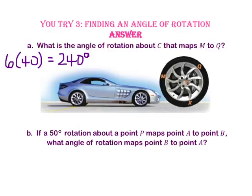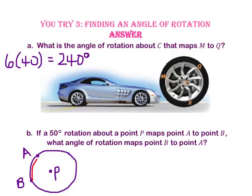For Part B, if a 50 degree rotation about a point P maps point A to point B, what angle of rotation maps point B to point A? If it is 50 degrees to move point A to point B, and 360 degrees is a full circle, then to map point B onto point A counterclockwise we would have to move 360 minus 50 degrees, or 310 degrees.